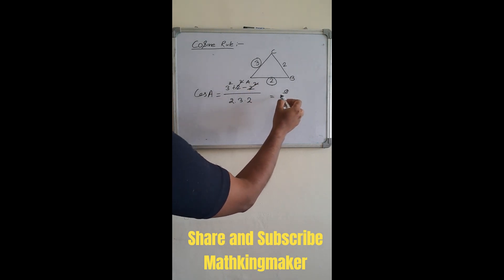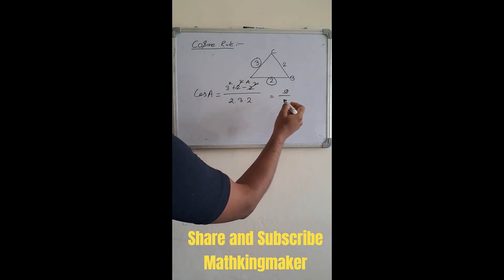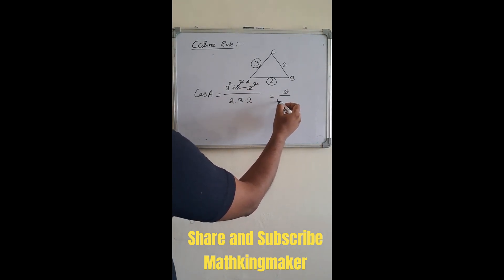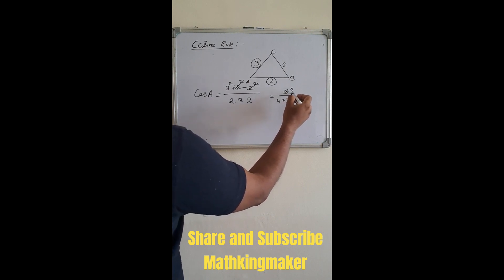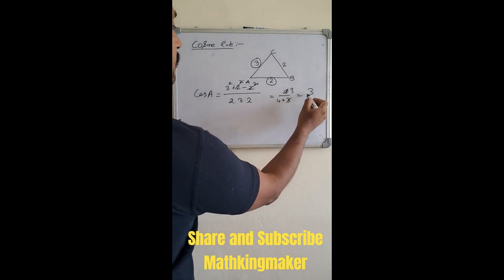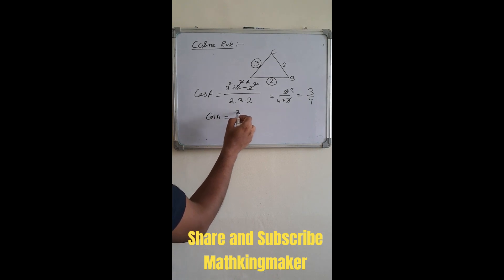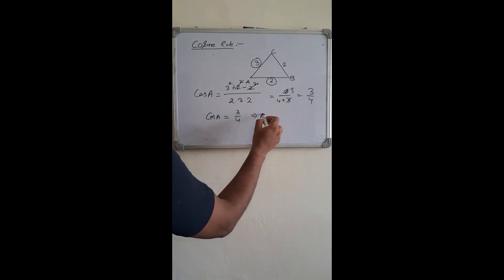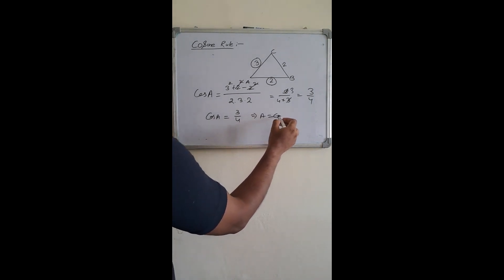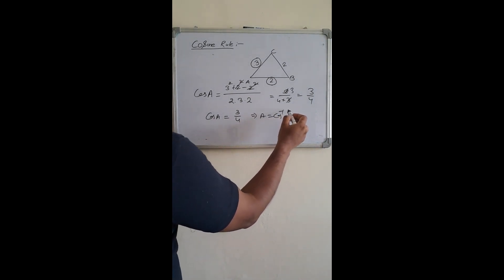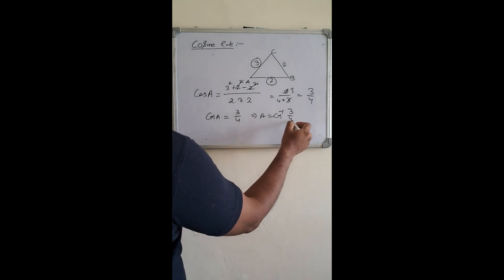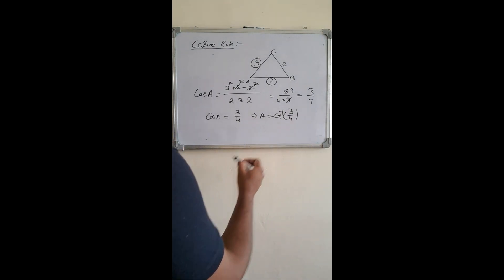So it is four into three, which gives three by four. You can find out cosine of A, that is three by four, or you can find out the angle that is cos inverse of three by four.